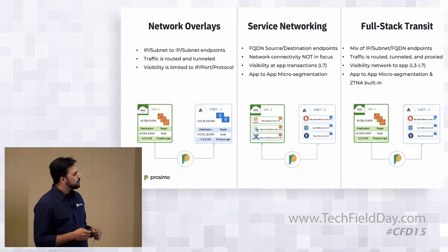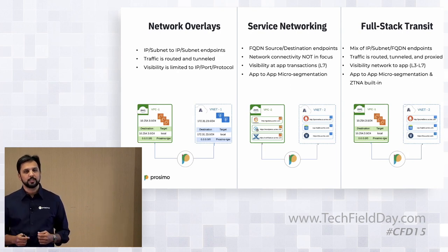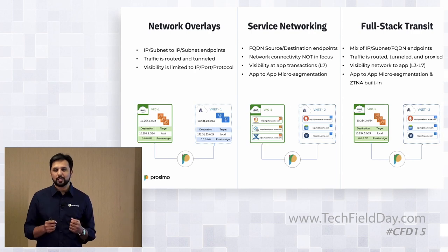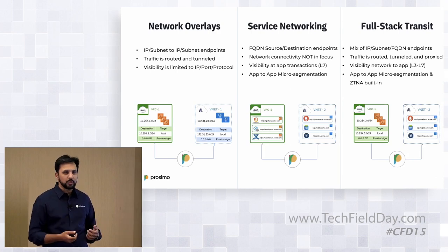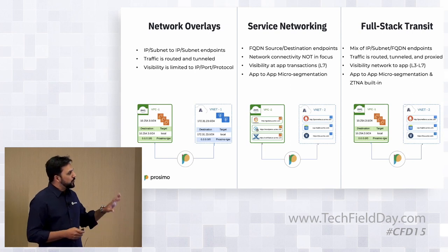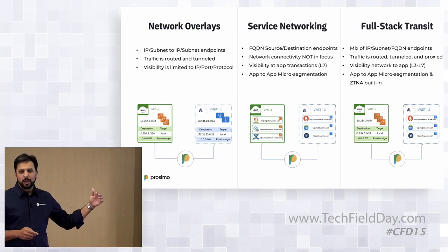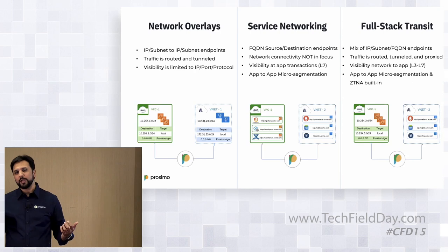The third pattern is full stack transit — anything talking to anything. IP endpoints talking to FQDNs, FQDNs talking to FQDNs, web applications talking to APIs, web frontends talking to databases, IPs talking to certain applications, users connecting to those applications. It's a completely full stack transit. How would you apply policies, provide the right layer of visibility, observability, and micro-segmentation? These are broadly the three patterns we've seen in customer deployments, and I'll walk through a case study of each.